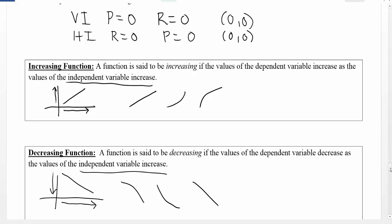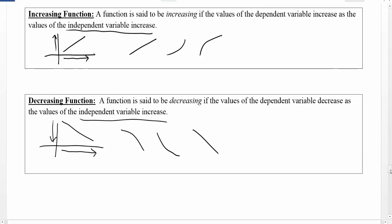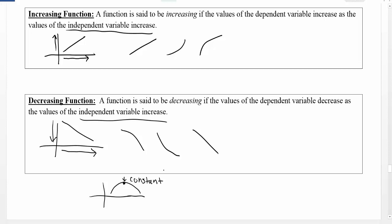One important thing is what happens when you change from increasing to decreasing. If you have a function that does both — something that looks like an arc — at the point where we change from increasing to decreasing, we consider that point to be constant. At that particular moment, when you've reached the point where you're going to change from either increasing to decreasing or decreasing to increasing, that one point is constant because it doesn't do either at that moment.